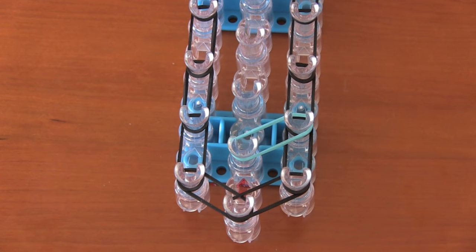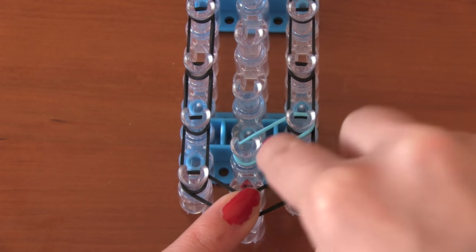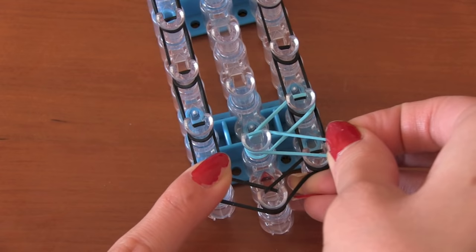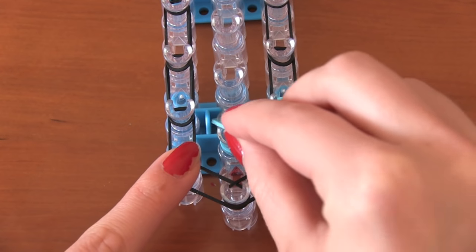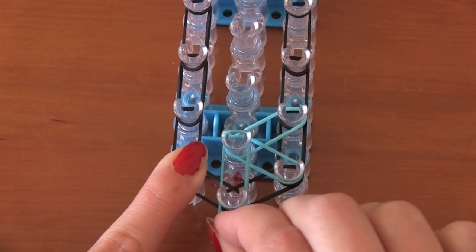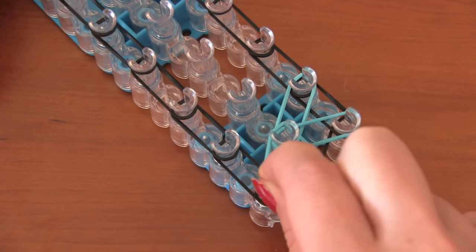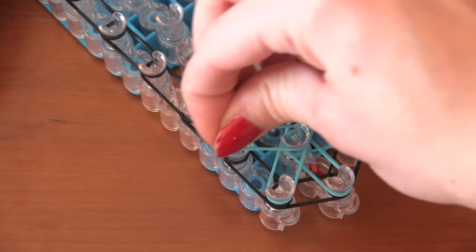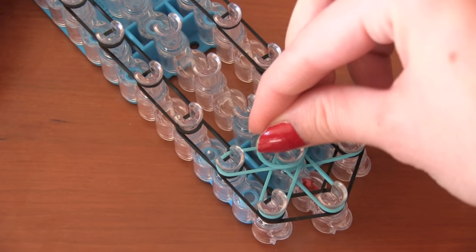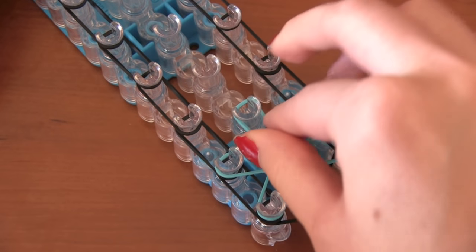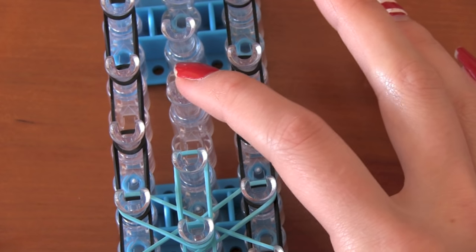Now you're going to move in a clockwise direction with the next band. So it's going to go on the middle peg and on that lower right peg. Then take it from the second middle to the first middle on the bottom. Then the middle to the lower left, the middle to the upper left, and the middle to the third middle or the upper middle above it. You're going to do this exact same thing with your next star.